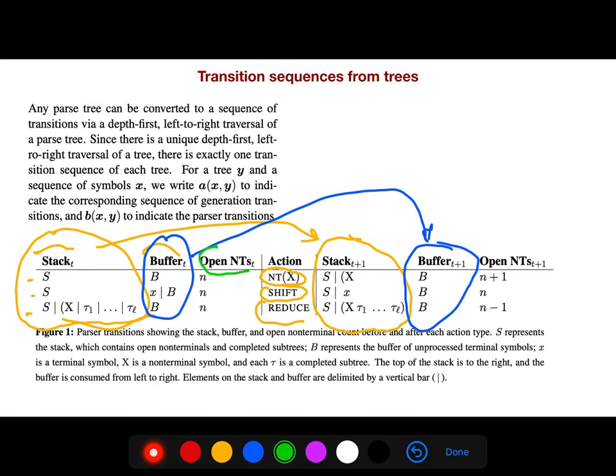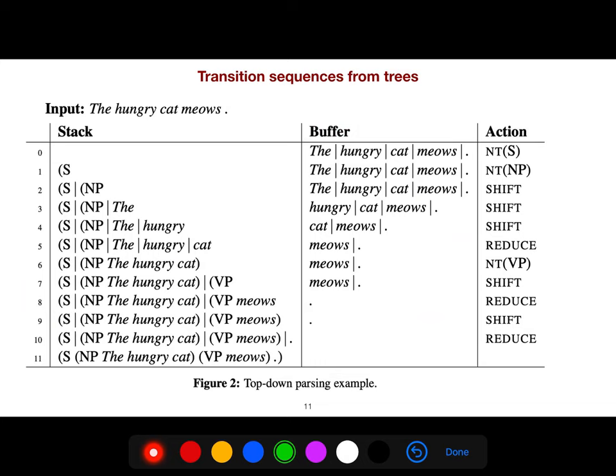Same for open NT. Open NT. And so, we have three things to identify the configuration. Stack, buffer, and action. For example, for the word the hungry cat muse. First, everything is in the stack. You see, this is very full. Everything is in the buffer. Everything is full. And the stack is empty.